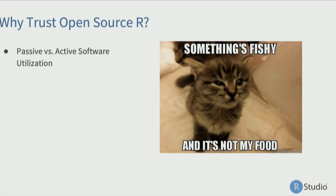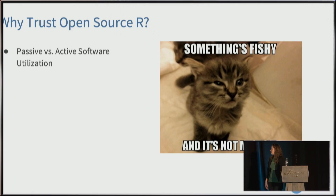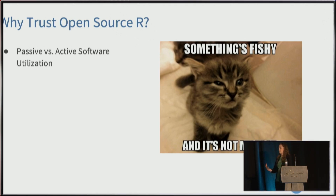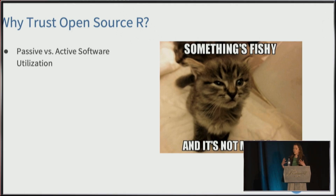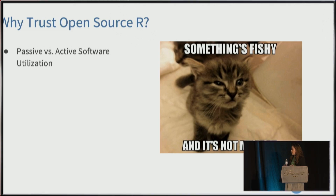Why trust open source R? The old school thought before open source became utilized in enterprise settings was that you buy your software from a big company that wrote it, and then you pay for support. If you've ever bought software from a big company and had it not function as anticipated — it's hard to validate because it's closed source. You cannot see the source code or validate for yourself that the software will perform as anticipated.